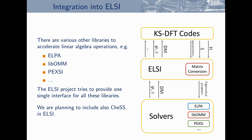CHESS is not the only sparse linear algebra library — there are also PEXSI, ELPA, LIBOMM, etc. It can be cumbersome for code developers to interface with all of these libraries. Therefore, some people started the ELC project, whose idea is to unify all of these libraries: an electronic structure code only needs to interface with ELC, which then internally interfaces with all the various solvers. At the moment CHESS is not yet in ELC, but we are working with them and hoping that in the future CHESS will be included, so codes already interfacing ELC will get CHESS for free.